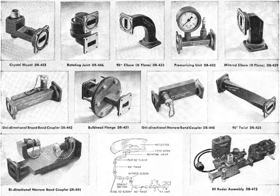In electromagnetics and communications engineering, the term waveguide may refer to any linear structure that conveys electromagnetic waves between its endpoints. However, the original and most common meaning is a hollow metal pipe used to carry radio waves. This type of waveguide is used as a transmission line mostly at microwave frequencies, for such purposes as connecting microwave transmitters and receivers to their antennas, in equipment such as microwave ovens, radar sets, satellite communications, and microwave radio links.